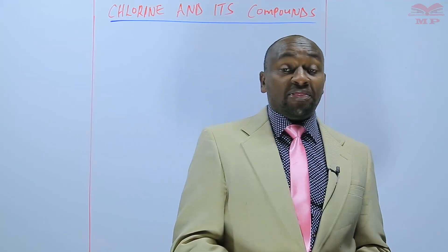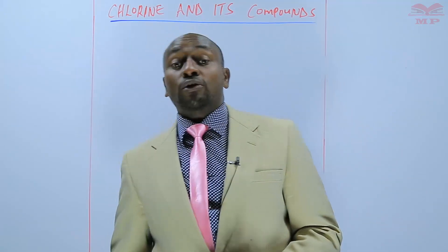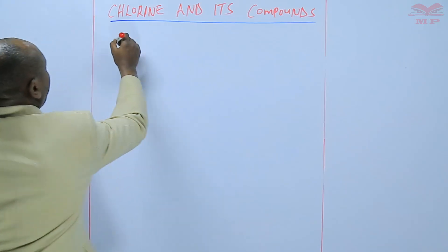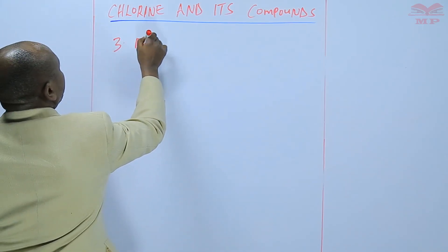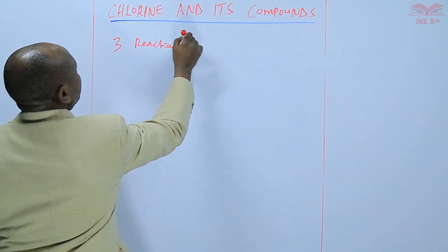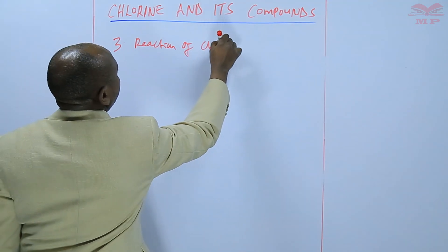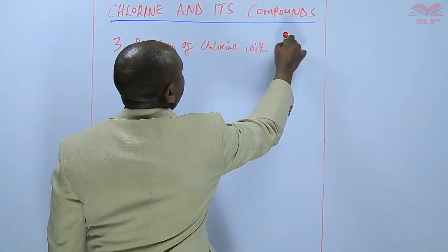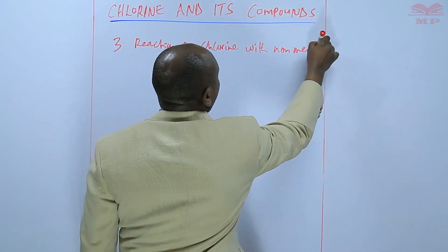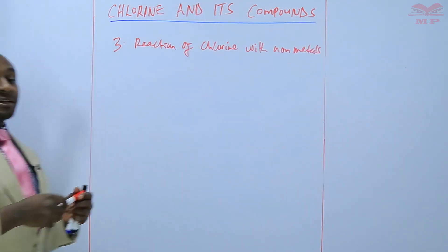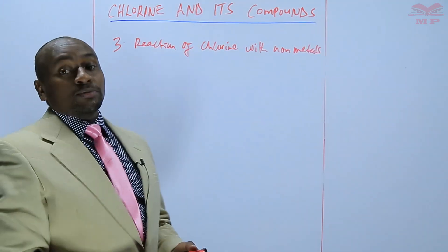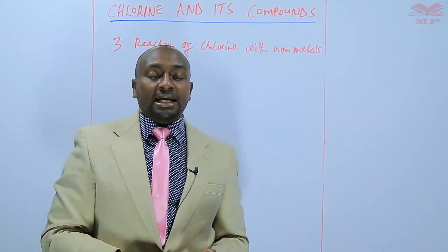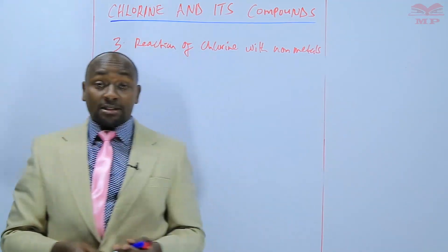Number three is the reaction of chlorine with non-metals. So basically we find that chlorine reacts with non-metals to form non-metallic chlorides.